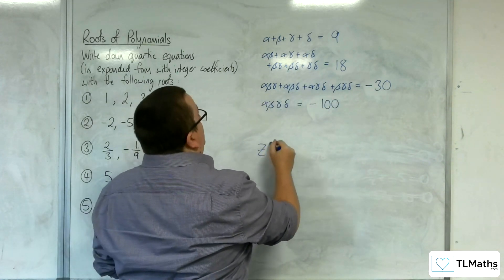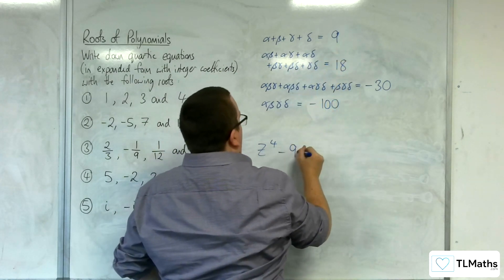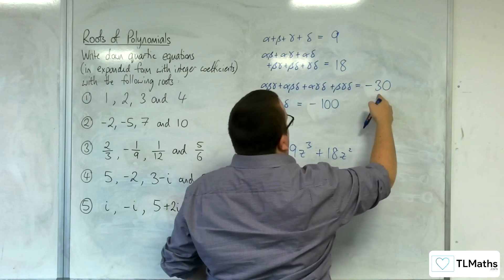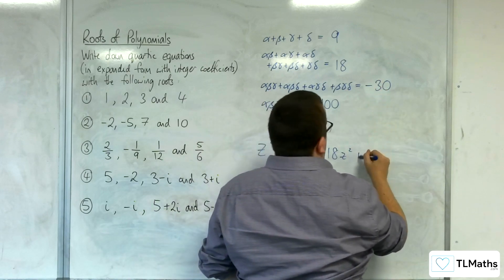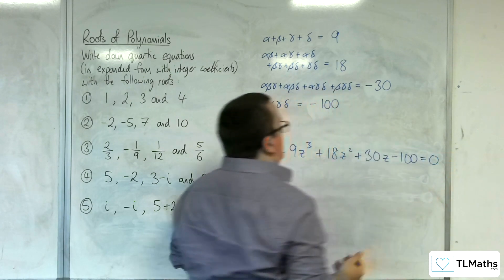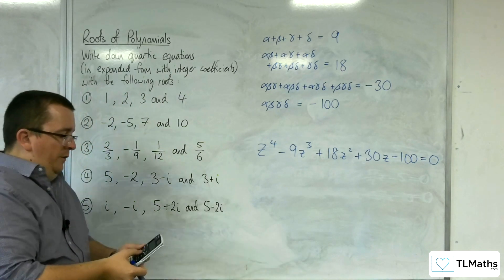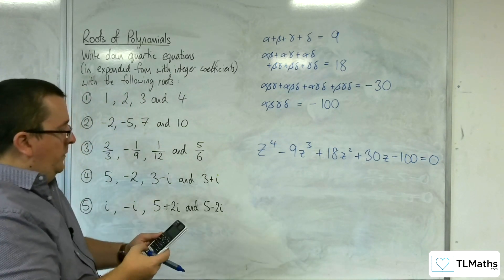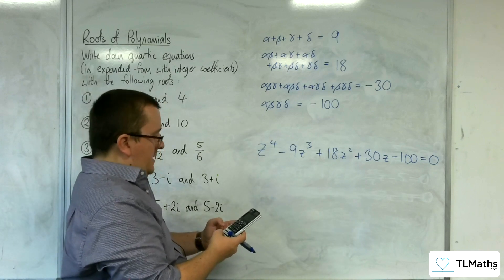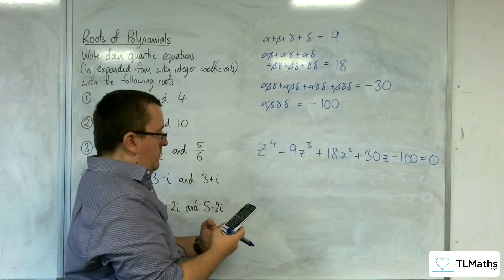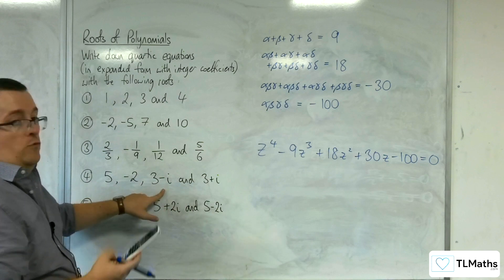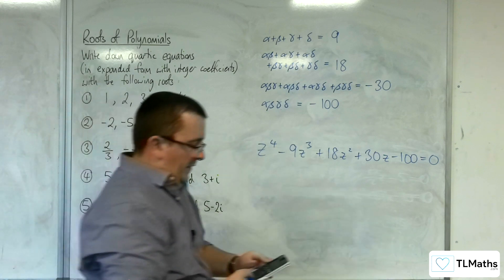So we've got z to the 4, take away 9z cubed, plus 18z squared, plus 30z, and then take away 100, equals 0. Let's check it on the quartic solver. We've got 1, minus 9, 18, 30, and minus 100. And we get 5, minus 2, 3 plus i, and 3 minus i. So that one's sorted.